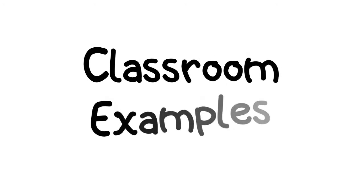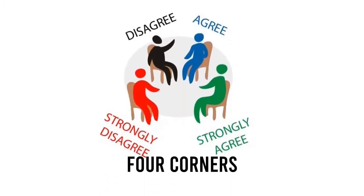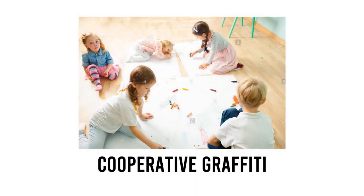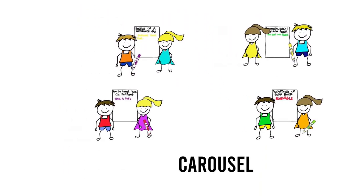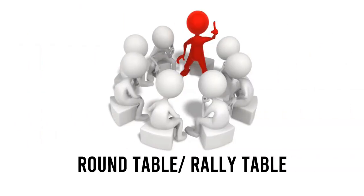These are some classroom examples of cooperative learning: Four Corners, Cooperative Graffiti, Carousel, Right Around, and Round Table or Rally Table.